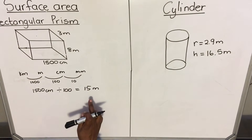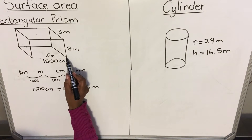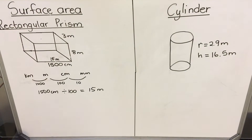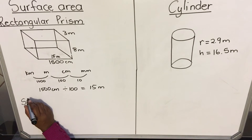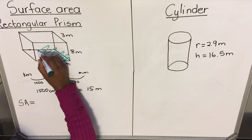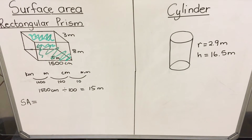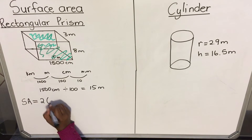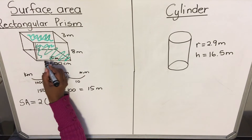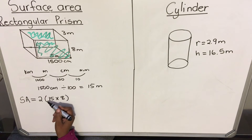So this length is 15 meters and the other is 8 meters. Now let's calculate the surface area for this rectangular prism. Surface area is the outside part. For the rectangular prism, we have two faces that are the same — this front one and the one at the back. Because they are exactly the same and there are two of them, it's 2 times length times breadth. For the front face, my length is 15 meters and my breadth is 8.